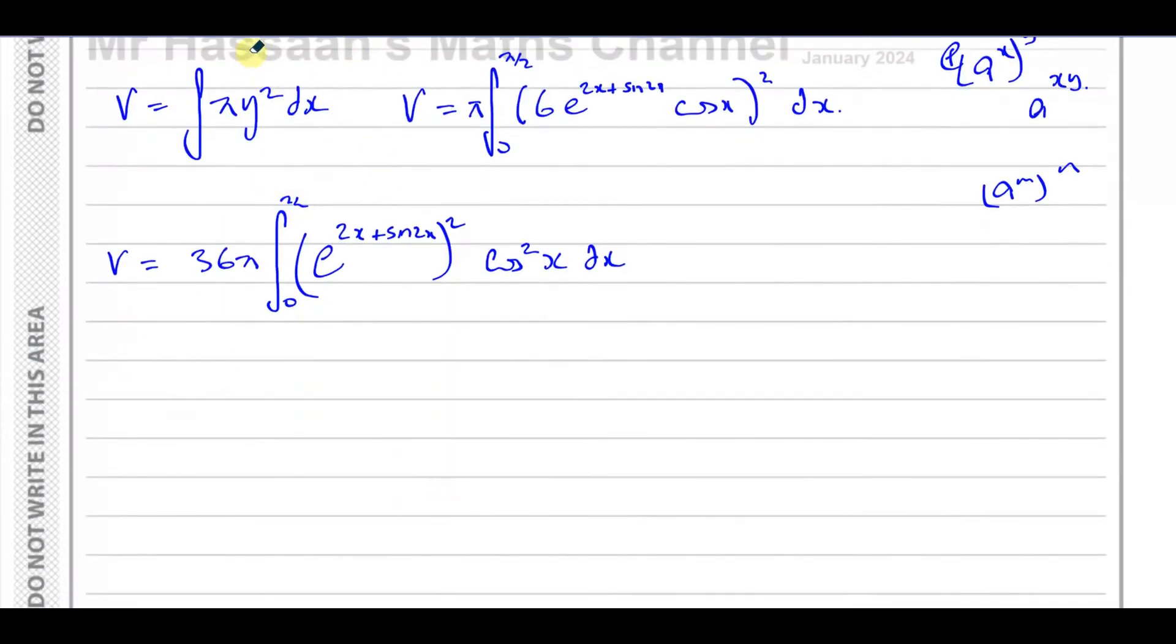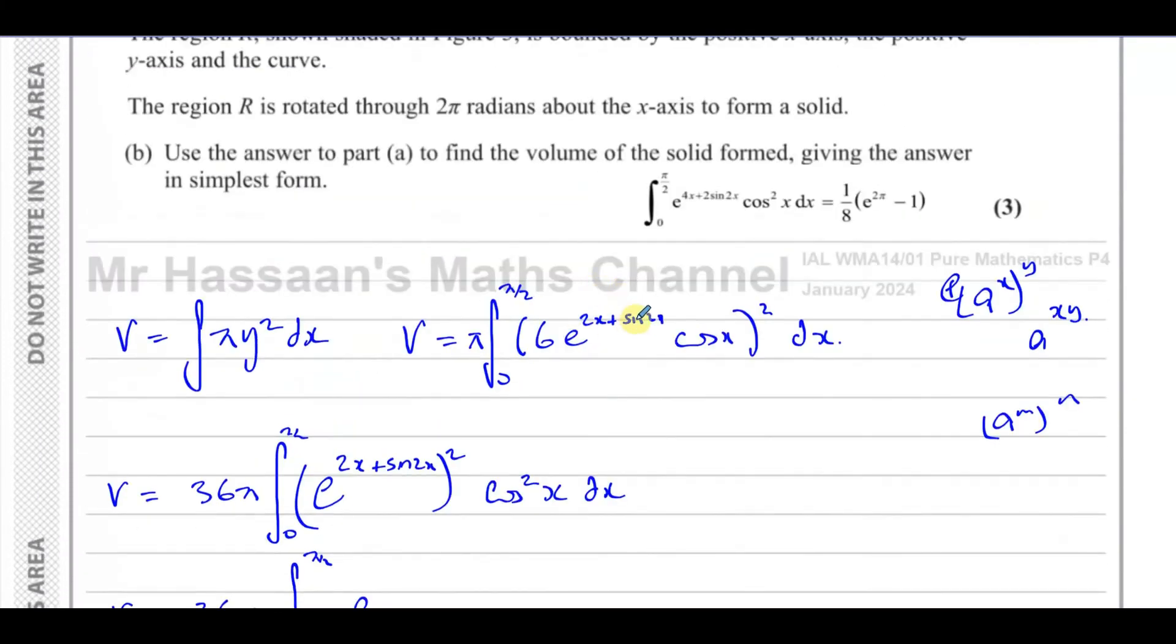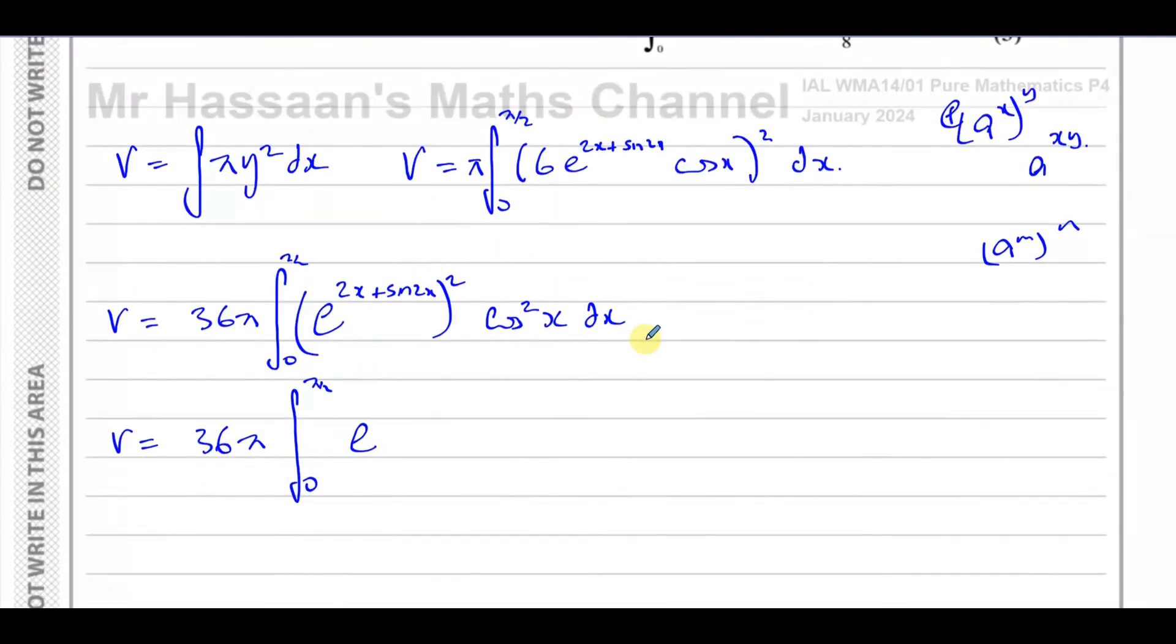The volume equals 36π times the integral between 0 and π over 2 of e to the power of 4x plus 2 sine 2x, because we have to multiply this by 2, so 2x times 2 and sine 2x times 2, cosine squared x dx.